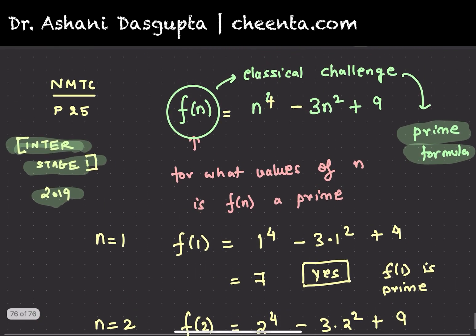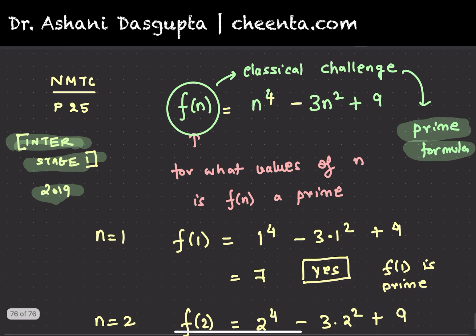Now coming back to the problem that we have. We want to check for what values of n, f(n) is a prime number. One way to see it is to try and factorize this thing. If we can factor this thing into two parts, product of two expressions,